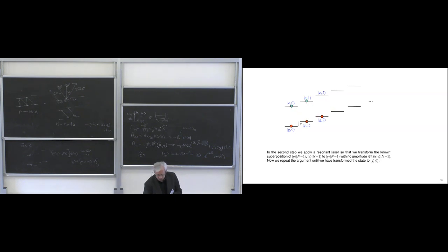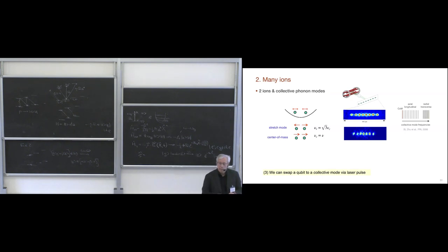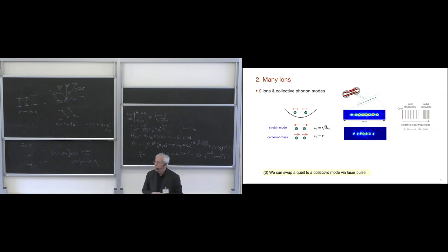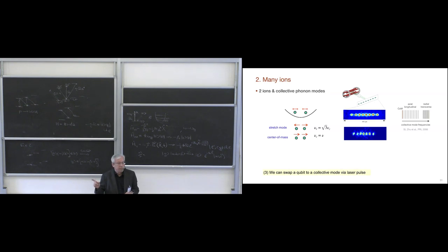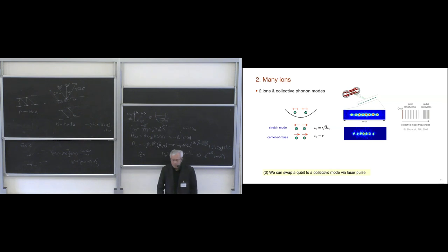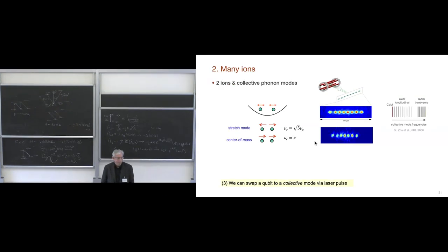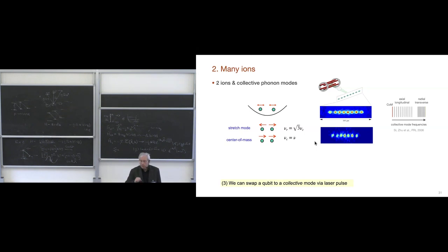Now we get to the more complicated and interesting part: the N-ion case, where we engineer many-body systems. We take a short break and then continue with how we make ions interact with each other — ions that are spatially separated — using their collective motional modes.